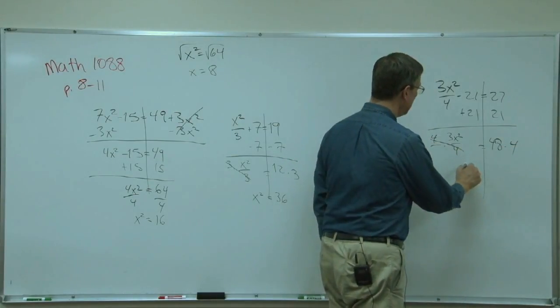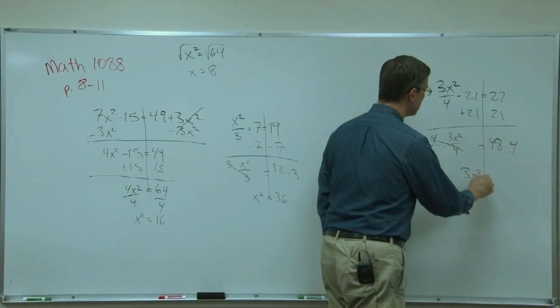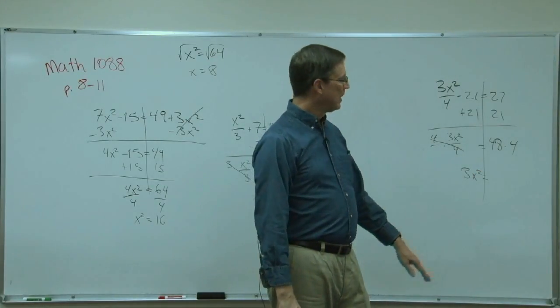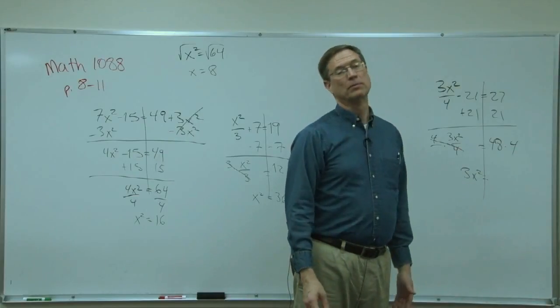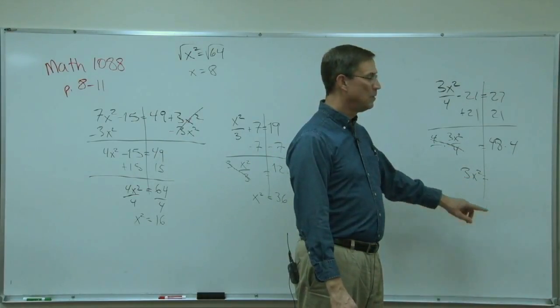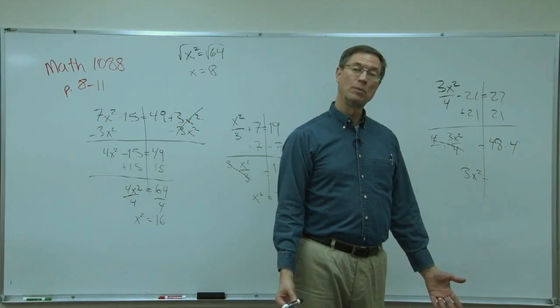I need to multiply both sides by 4. And then that'll cancel. And I'll have 3x squared equals, and I'll let you finish the math. And then the last step is divide. Well, second to the last step. Divide by the 3. And then you'll have a number that you can do the square root.